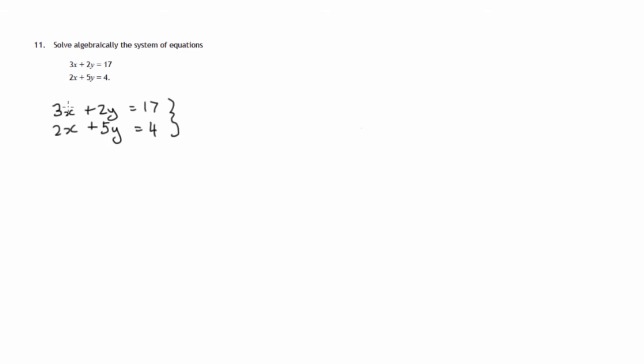So we'll look at the x terms. 3x, 2x. We think what's the smallest number that divides by 3 and 2 exactly? We get 6. So we can make both of these equations into 6x's. By multiplying the first one by 2, by multiplying the second one by 3.